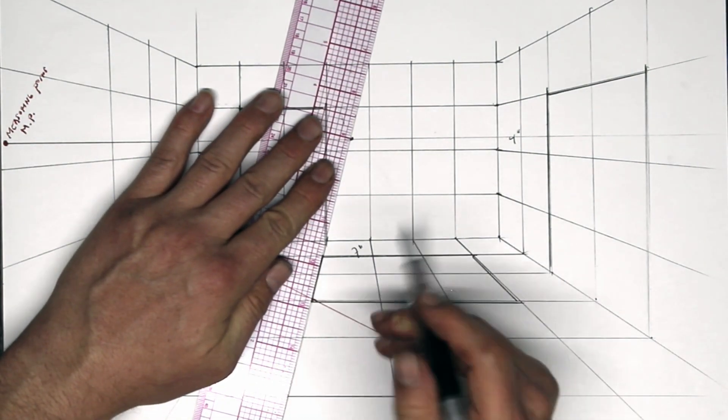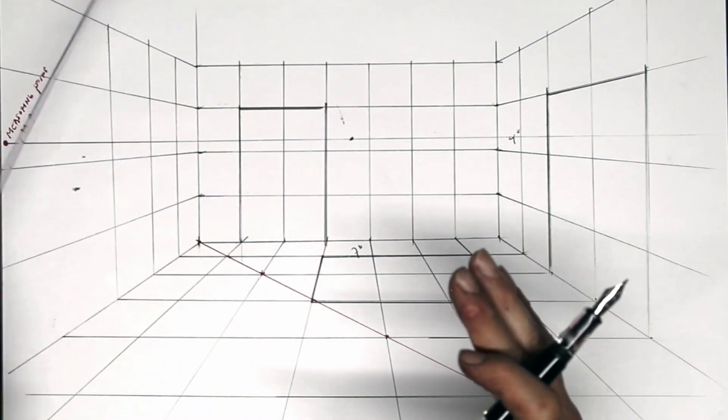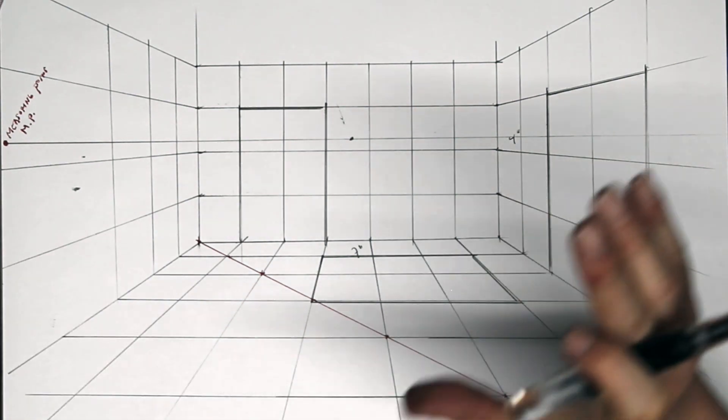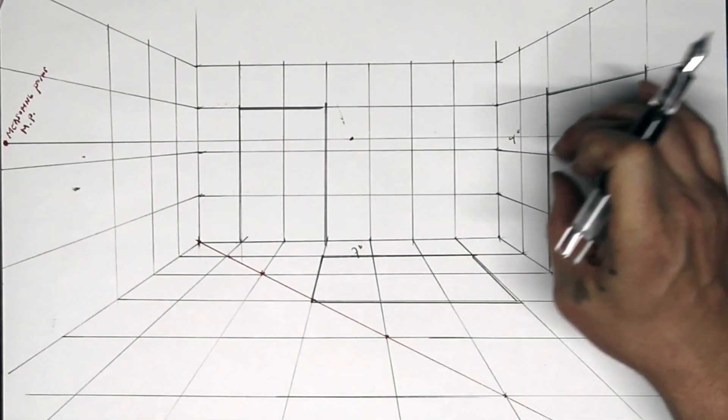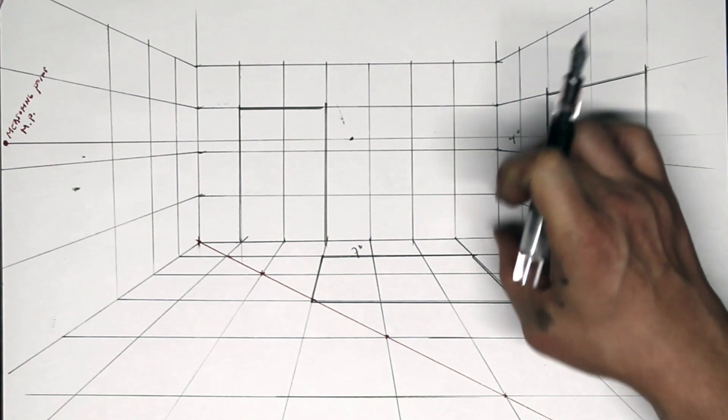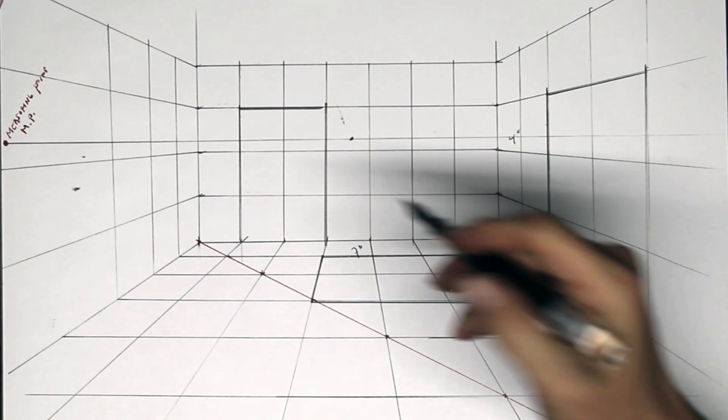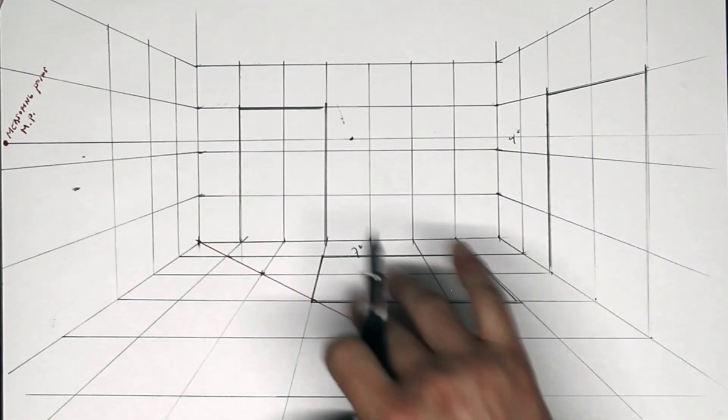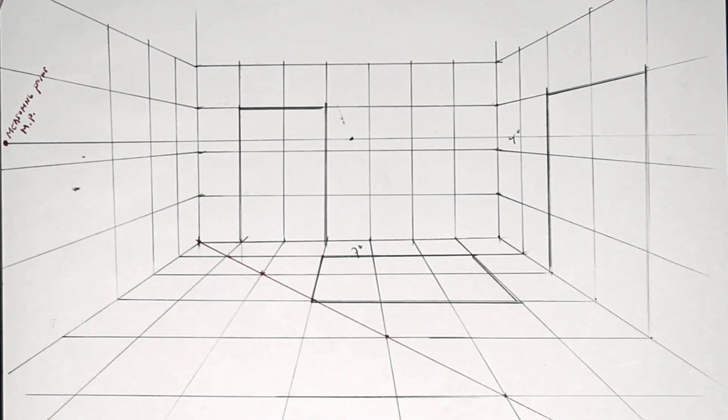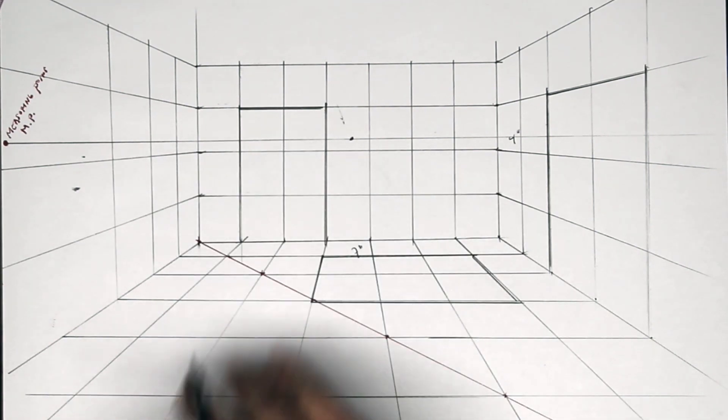This grid technique is used a lot in interior design. So when planning a room, quite often interior designers will draw a grid where each tile represents, let's say, a foot. And then, working from a plan, they'll put couches in, they'll map out what the kitchen islands look like in the middle of the kitchen, all that kind of stuff.